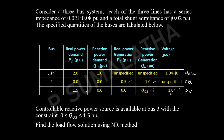Also, they have given that a controllable reactive power source is available at bus 3 with the constraint 0 ≤ QG3 ≤ 1.5 per unit. Find the load flow solution using the NR method.